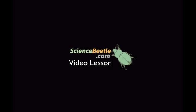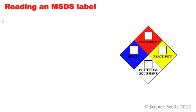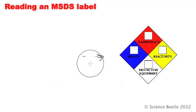Science Beetle. Welcome back students. What I wanted to do for this lesson is go over reading an MSDS label. MSDS labels provide us with a lot of information about the safety that you should know about prior to using any chemicals in the lab. Right here on the side, what I provided for you is going to be an example of an MSDS label. But before we go there, I want to make sure I explain what MSDS is.